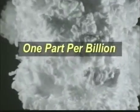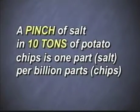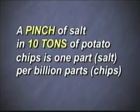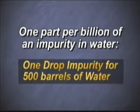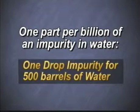Let's use one part per billion. To give you an idea of how little this would be, a pinch of salt in 10 tons of potato chips is also one part salt per billion parts chips. Similarly, one part per billion of an impurity in water represents a tiny fraction of the total amount of water — equivalent to one drop of impurity in 500 barrels of water.